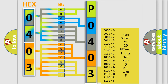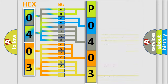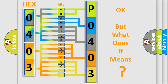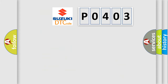We now know in what way the diagnostic tool translates the received information into a more comprehensible format. The number itself does not make sense to us if we cannot assign information about what it actually expresses. So, what does the Diagnostic Trouble Code P0403 interpret specifically for Suzuki car manufacturers?